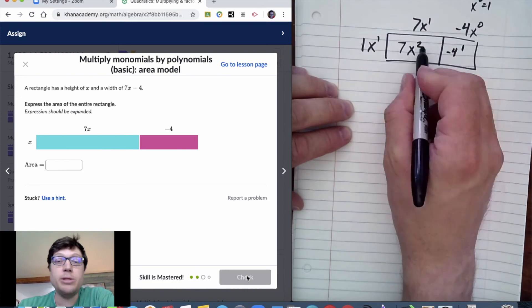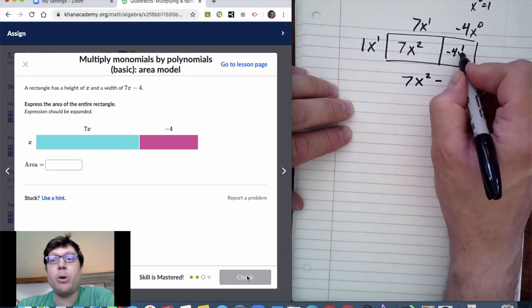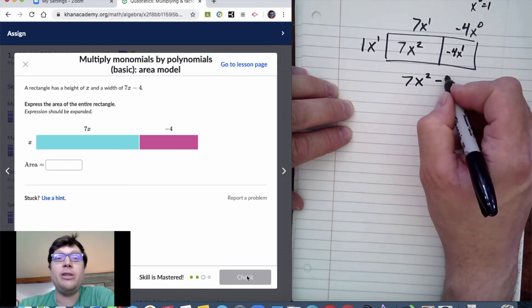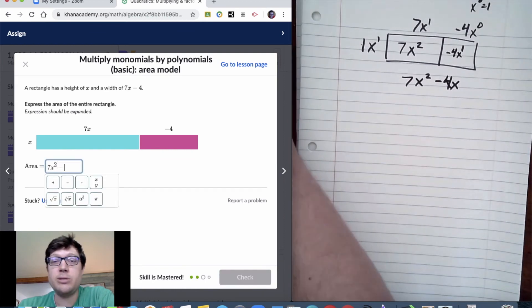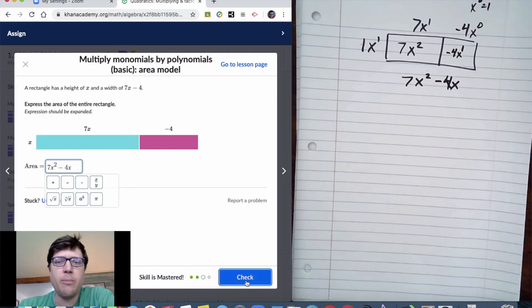We still multiply 1 times negative 4, but we're only going to add the exponent 1 and 0, which makes just 4x. So for my answer, 7x² - 4x.